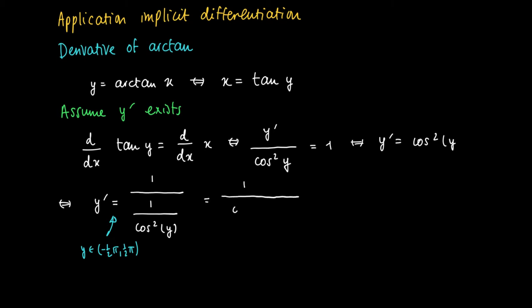Now we write the 1 we have in the middle as cosine squared y plus sine squared y, and we divide by cosine squared y. Now we may simplify as follows.